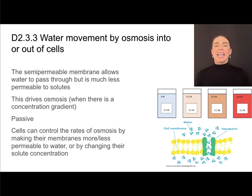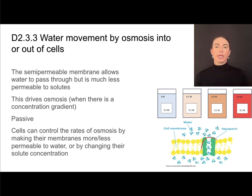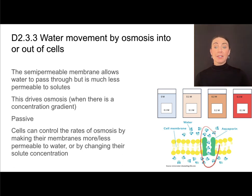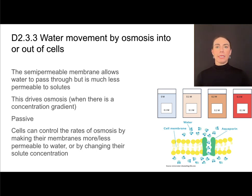Embedded within membranes are channel proteins called aquaporins, which allow water to pass through. Water can go through the phospholipid bilayer, but it passes much faster through aquaporins. The more aquaporins a cell produces and embeds in its membranes, the more permeable that cell will be to water and the faster osmosis will happen — it's a really cool adaptation that cells use.